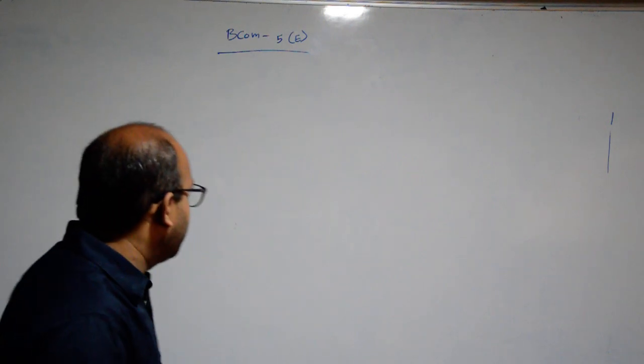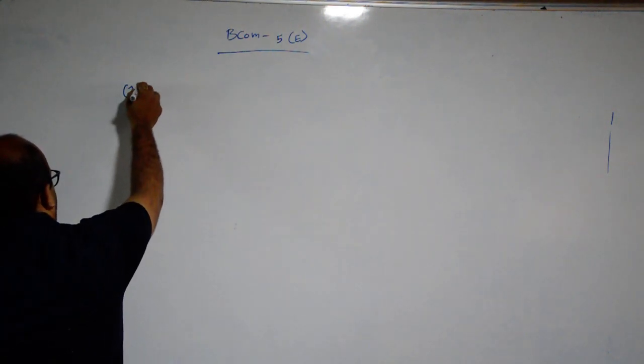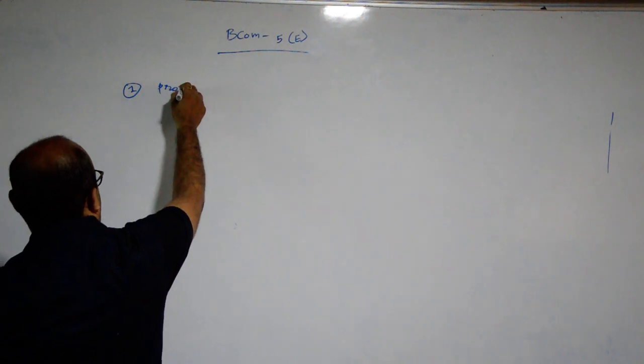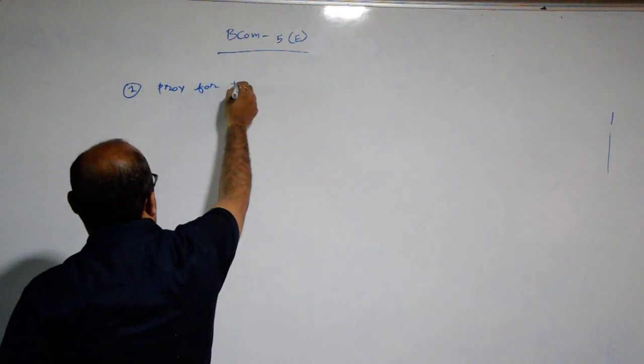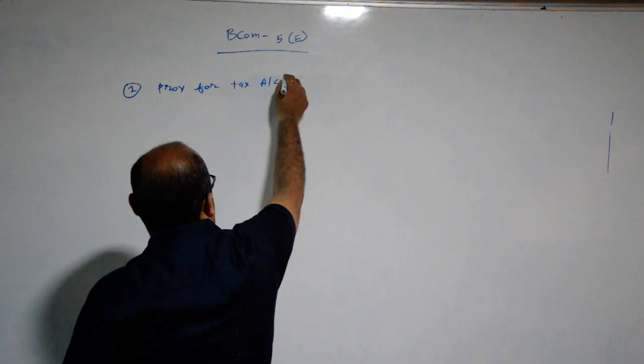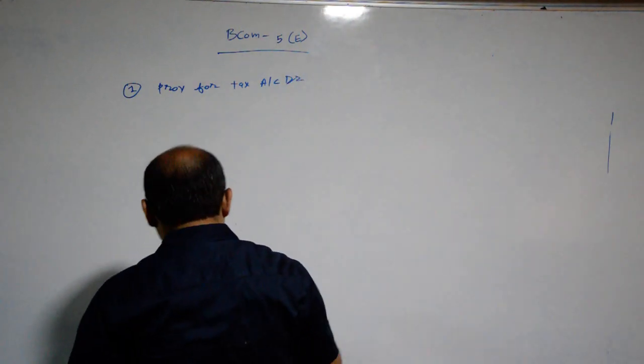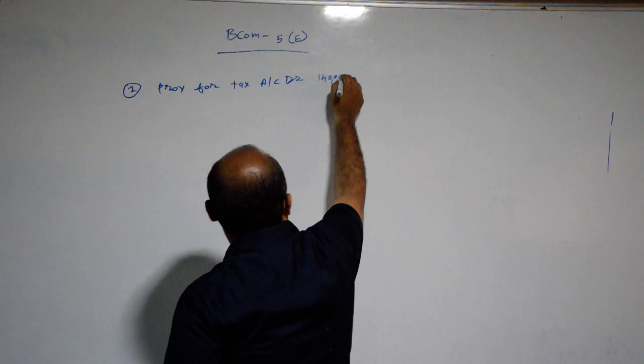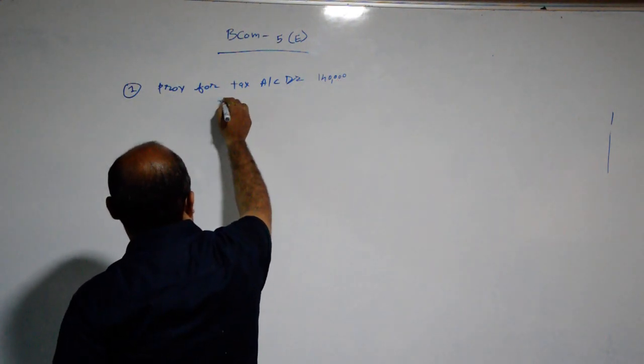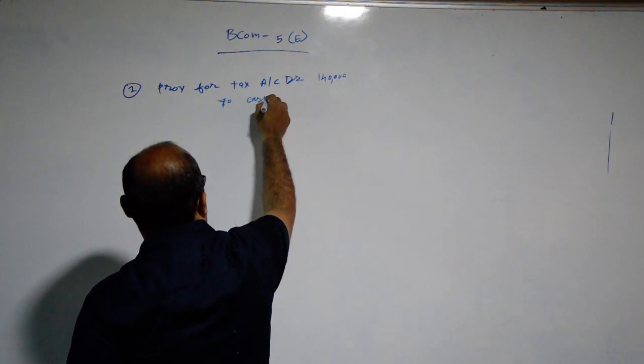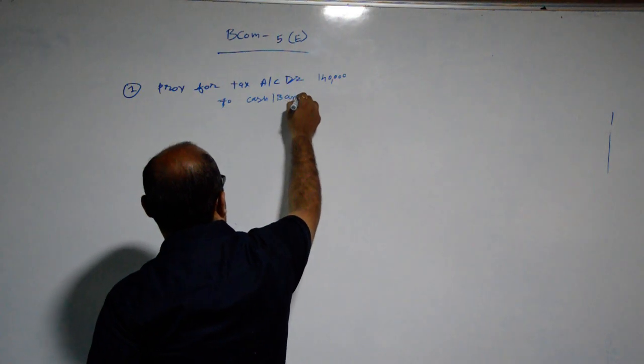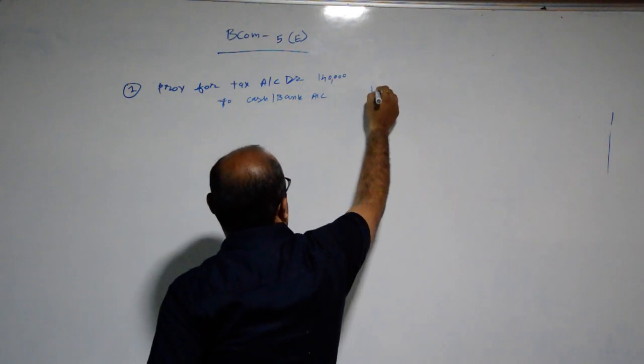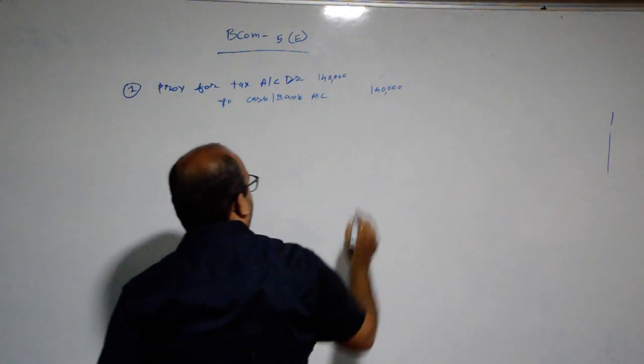Provision for tax account debit 1,040,000. To cash or bank account 1,040,000. Okay.